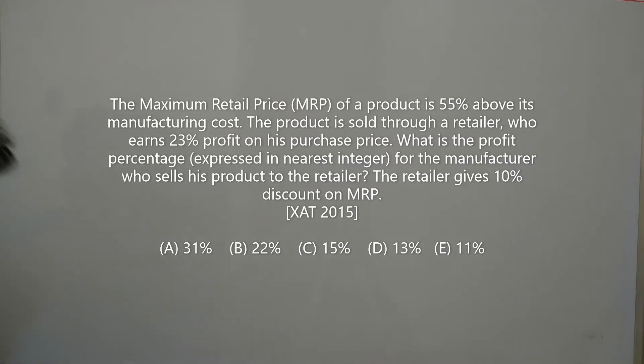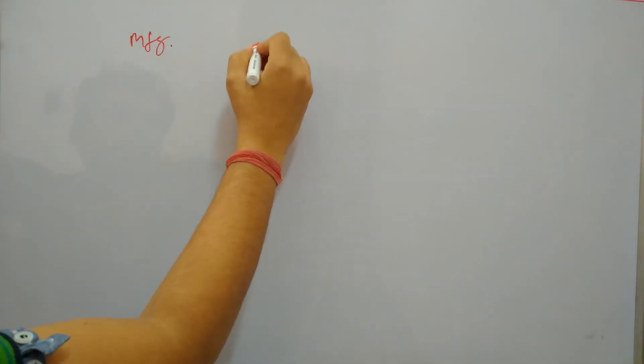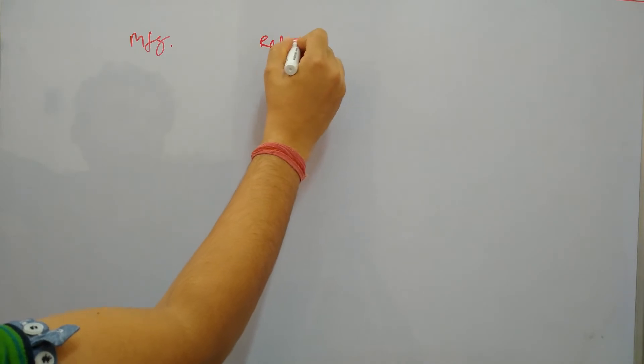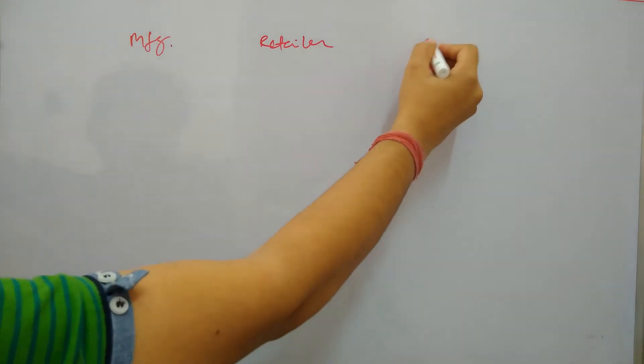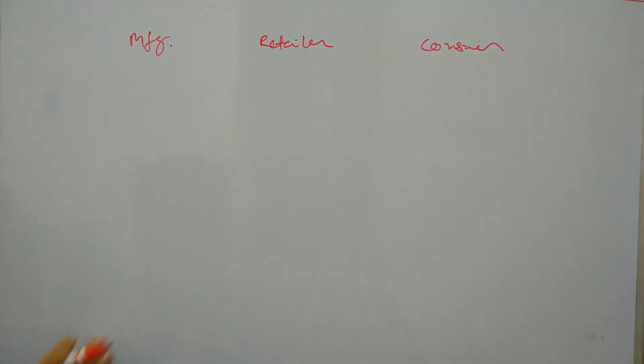This is a profit and loss question asked in XAT 2015 paper. In this case, three entities are involved: a manufacturer, a retailer, and a consumer who is actually purchasing the item.